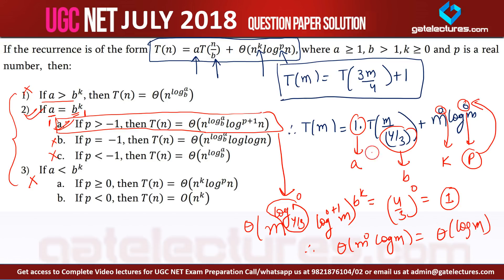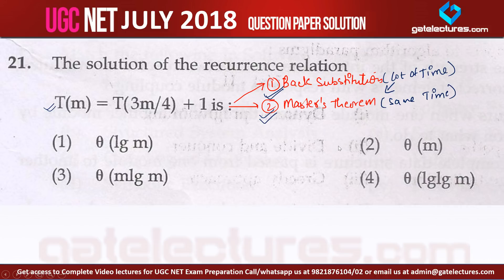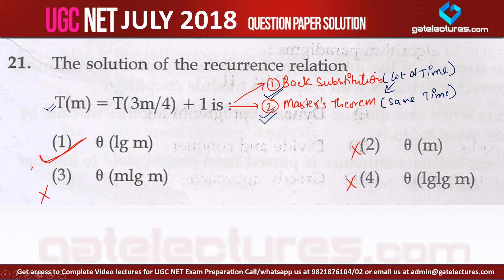The answer is Θ(log m), which matches option A. All other options are wrong. Both back substitution and master's theorem give the same result. I hope you understood the solution and enjoyed this video.